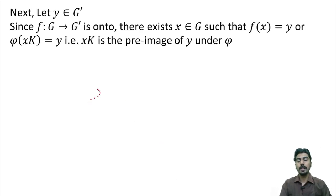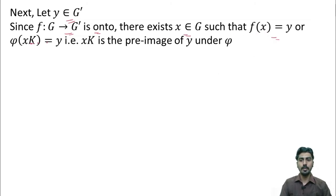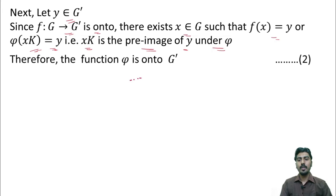Next, to prove that phi is onto, let me take an element y in G dash. Given that f from G to G dash is onto, there exists an element x in G which maps to y. Now, we know that f of x is phi of xK, so phi of xK equal to y. In other words, xK is the preimage of y under the mapping phi. And hence, phi is an onto function from G by K to G dash. Let me take this statement as 2.